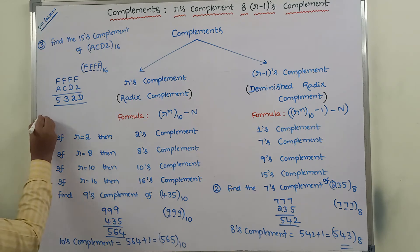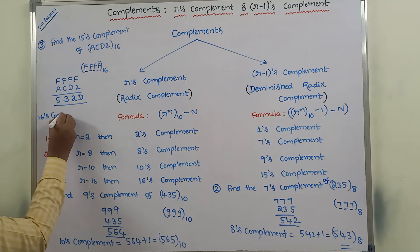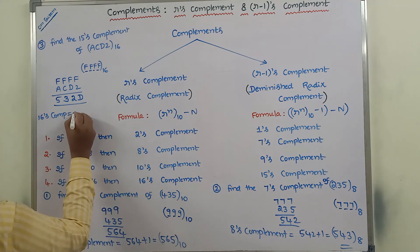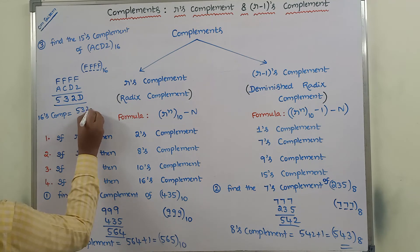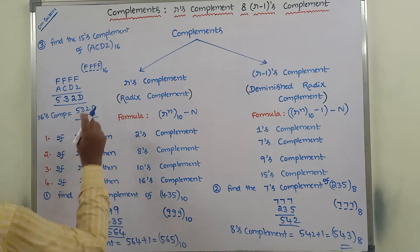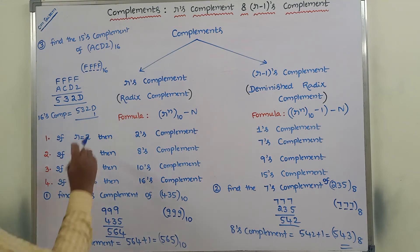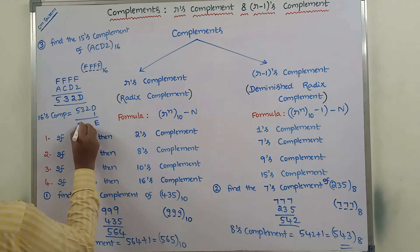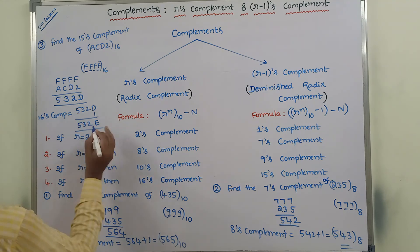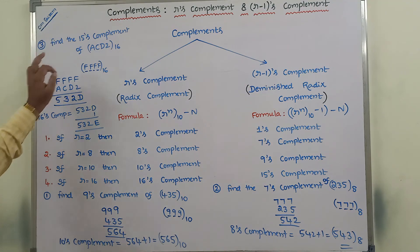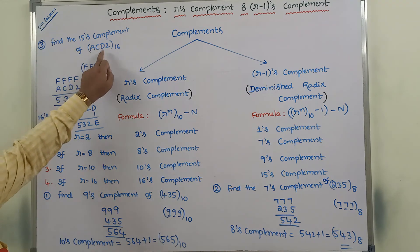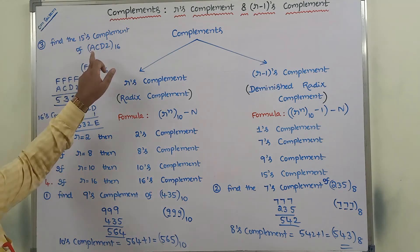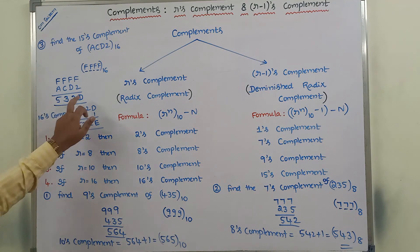Now what is the 16's complement? The 16's complement is nothing but 15's complement plus 1. That means 532D plus 1. D value is 13, 13 plus 1 is 14, and 14 means E in hexadecimal. So the result is 532E base 16. So 532E is the 16's complement and 532D is the 15's complement of ACD2 base 16.